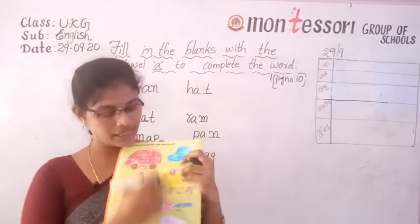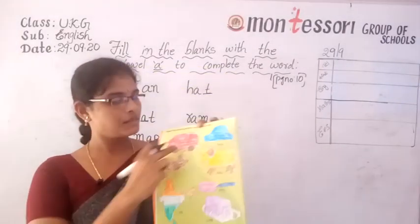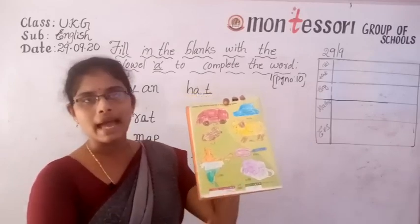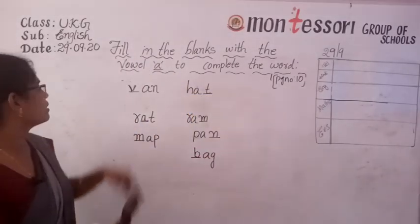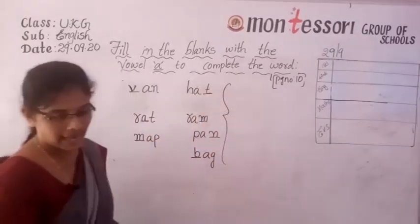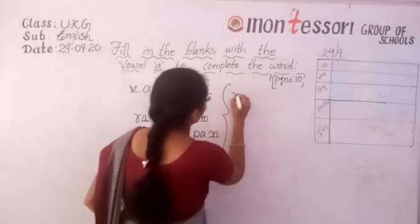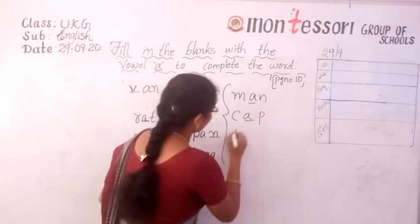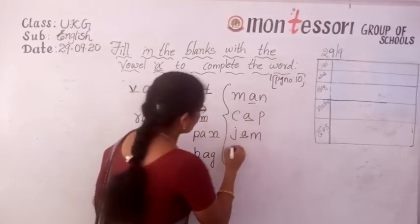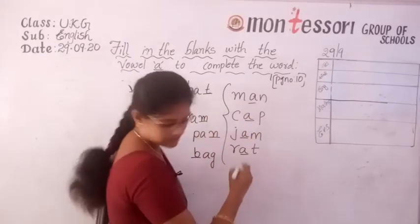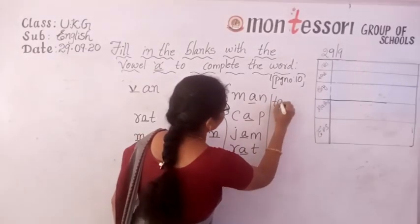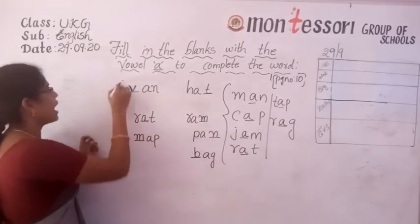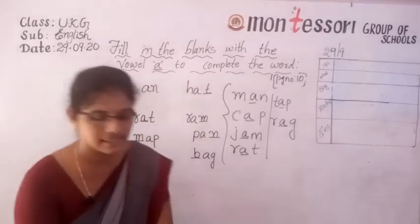You have to color these pictures: Van, Hat, Rat, Ram, Map, Pan, Bag. And you have to practice these words also — M-A-N, C-A-P, J-A-M, R-A-T, T-A-P, R-A-G.